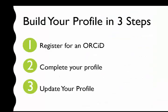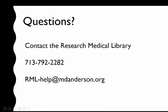To review, to build your profile, you want to take three steps: register for ORCID, complete your profile, and be sure to go in and update your profile — because it's no good if someone's Googling you and they find a profile that's not up to date. Some ways you can use your ORCID ID — it's just a 16-digit identifier — include adding it to your email signature, a personal website or blog, your resume, and of course linking it to your Scopus profile. If you have any questions about how to use ORCID, you can contact the Research Medical Library at 22282 or at rml-help@mdanderson.org.